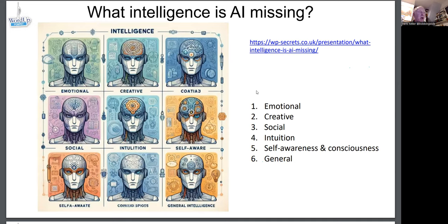What can't AI do? These are the six things it told me it couldn't do: emotional intelligence, creative intelligence, social intelligence, intuition, self-awareness or consciousness, and general intelligence. And of course it can't spell, especially when it's printing pictures.